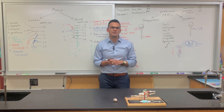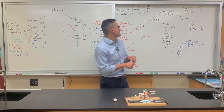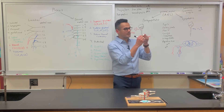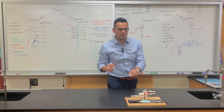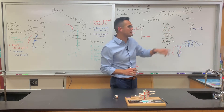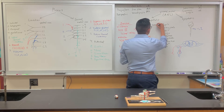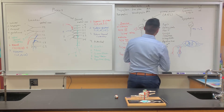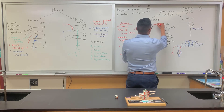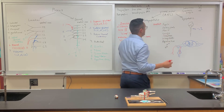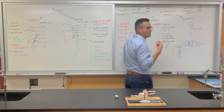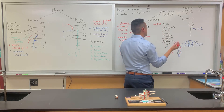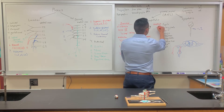For the parasympathetic nervous system — rest and digest or feed and breed — what happens with the pupils is constriction. So the pupils constrict. For the salivary glands, because we're activating the parasympathetic and thinking about feed and breed, we're going to activate them. So thick mucus is produced by the salivary glands.